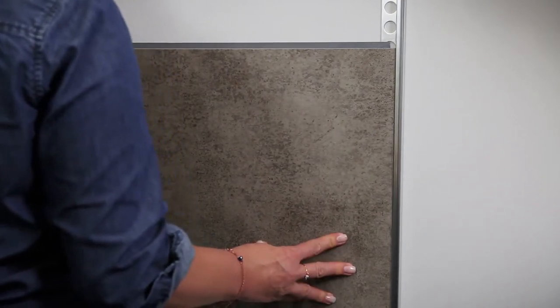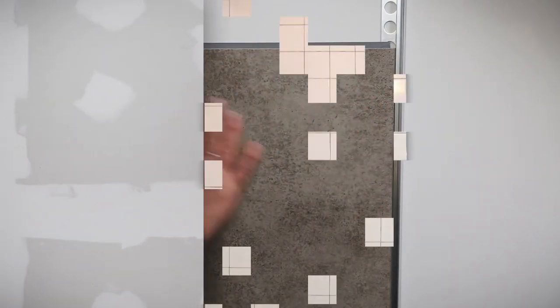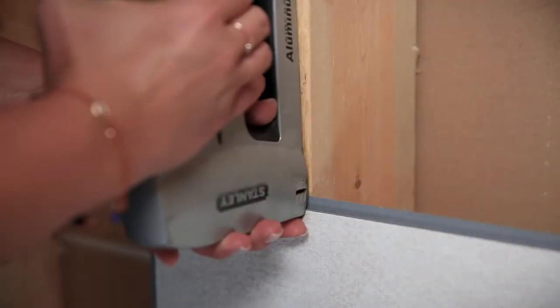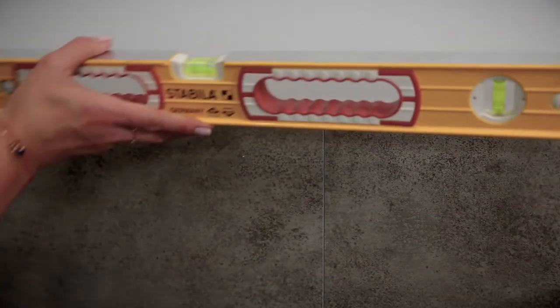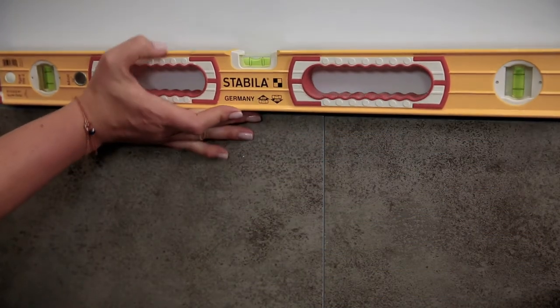DumaWall can be installed onto virtually any surface. Drywall, existing tile, even over wallpaper, it doesn't matter. It can also be easily nailed or stapled directly to bare wall studs. Continue adding your tiles, checking level and straightness of the interlocking grout lines as you go.